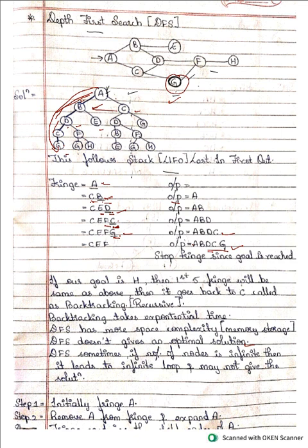DFS: sometimes if there are an infinite number of nodes, if the depth increases and you are not able to reach the goal state at all, it will infinitely dig deeper and deeper. That is the drawback of DFS — we cannot guarantee that we will get a solution. BFS is more advantageous compared to DFS because BFS always gives us some solution.